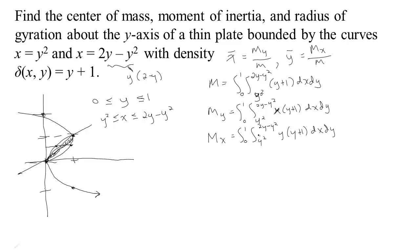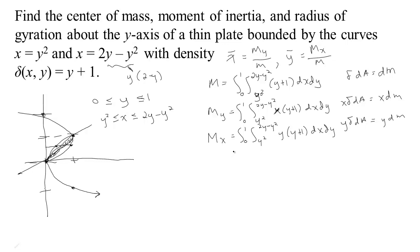All these integrals have the same bounds because we're talking about the same region — we're just calculating different things. If we integrate density dA, we sum up little chunks of mass. For a moment, we take a distance times a mass: x times density dA for the moment about the y-axis, and y times density dA for the moment about the x-axis.